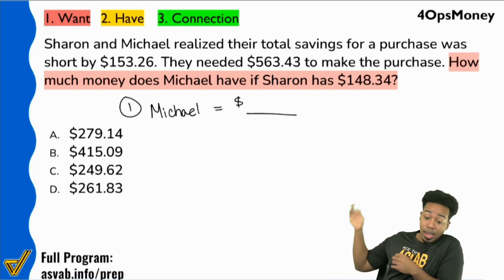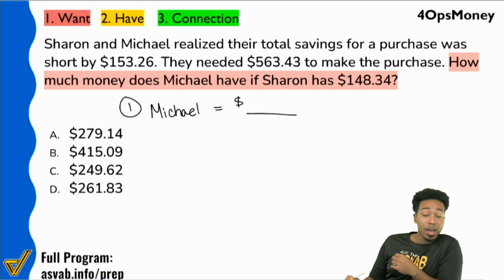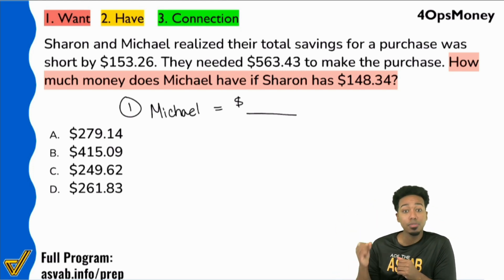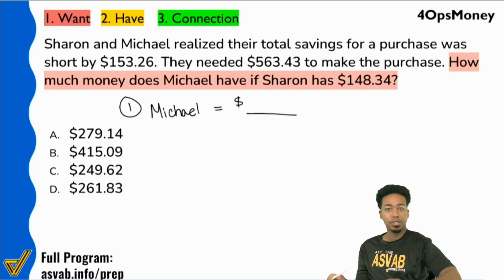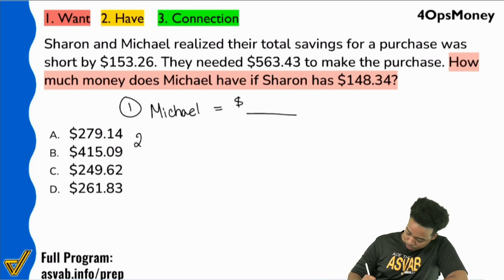If the question is asking how much money does Michael have, that means we're looking for the amount of money that Michael has. Cool. Number two: information.